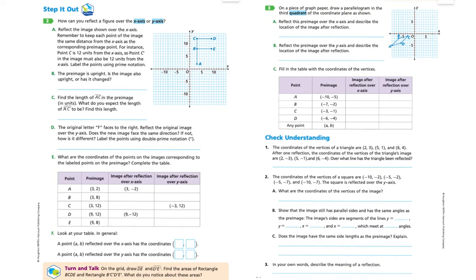Let's look at the Step It Out section. These two pages are both part of Step It Out. How can you reflect a figure over the x-axis or y-axis? In this case, the x-axis will be the line of reflection. If it's over the y-axis, the y-axis will be the line of reflection. They say reflect the image shown over the x-axis. Now we're going to look at this image, kind of looks like the letter F, and we're going to reflect it over this x-axis.